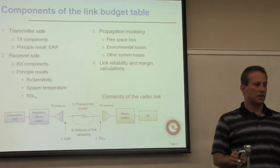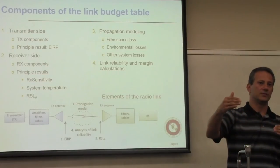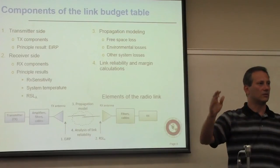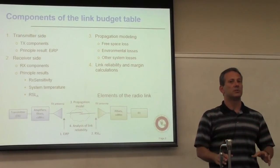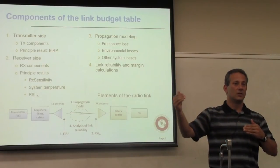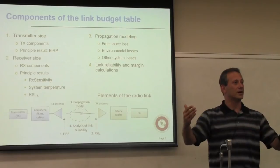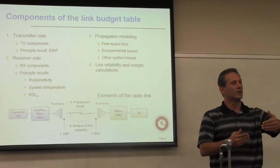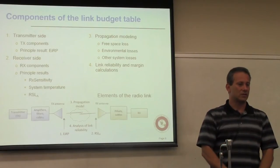Traditionally, satellite systems are designed for the worst case with a fixed modulation scheme — you design for the worst-case scenario and build in enough margin for, say, 99.999% reliability. But from what we know about Shannon's capacity formula, that means 99.999% of the time you're over-designed — you have great reliability but your throughput suffers, because you could have achieved more throughput if the link conditions were better.